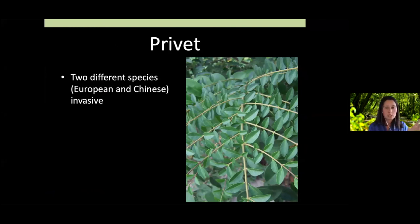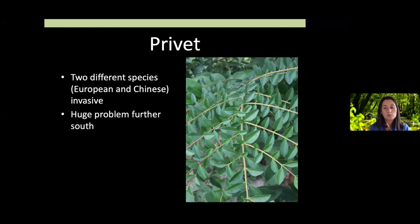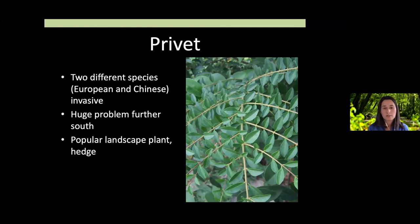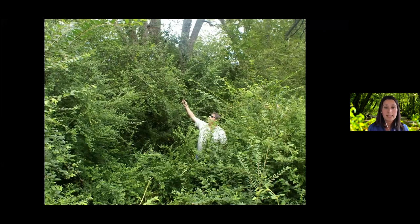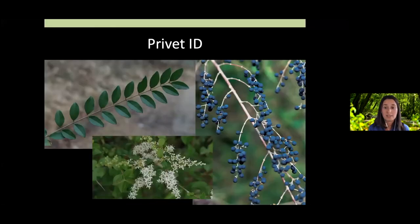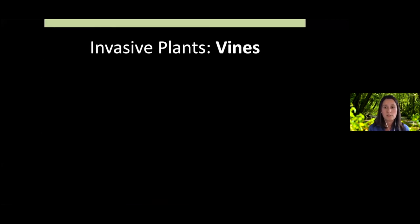Another shrub everyone should know about is privet. There are a couple of different species of invasive non-native privet — a huge problem further south, but increasingly becoming a problem here as well. It's a very popular landscape plant because you can grow an evergreen hedge with it, but you can see how it gets out of control. If you have a hedge of privet, you know it can sprout up everywhere in your yard that you did not want it.